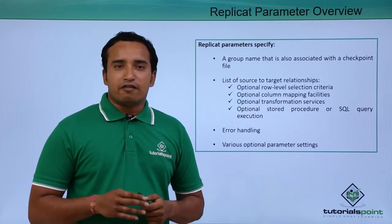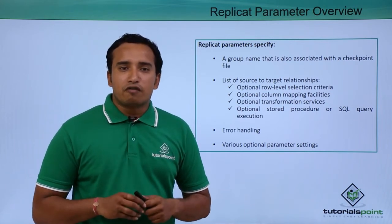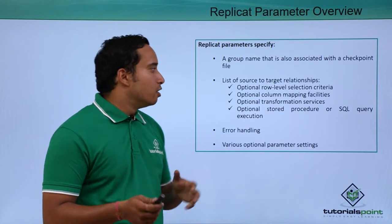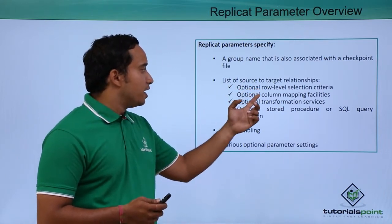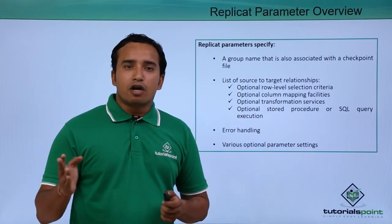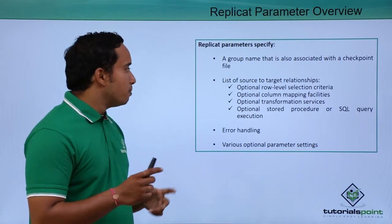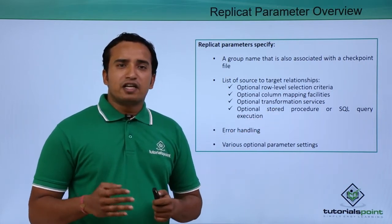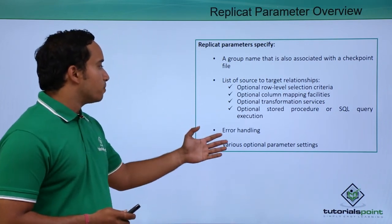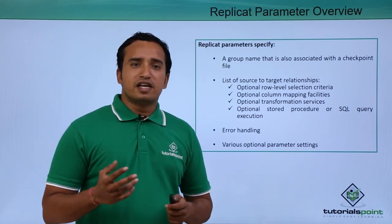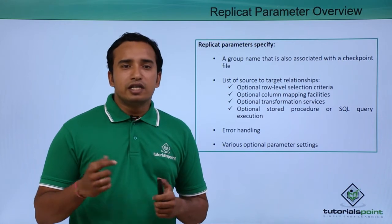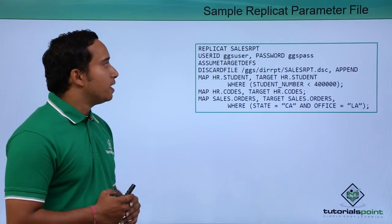Various transformations are optional in the replicate parameters. For example, you can use row-level selection criteria with a where clause to restrict which data gets replicated — your extract may capture all the data, but replication can be filtered. You can also do column mapping, for instance when column names differ between source and target databases. Additionally, there are optional transformation services and error handling parameters, such as handling collisions caused by unique constraint errors using handle collisions.